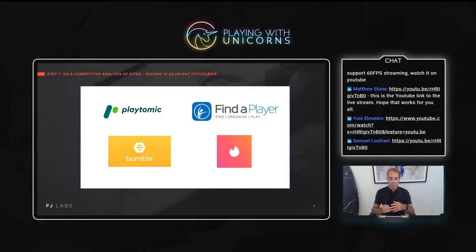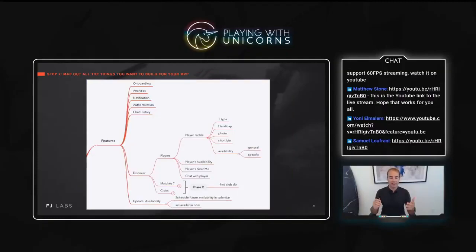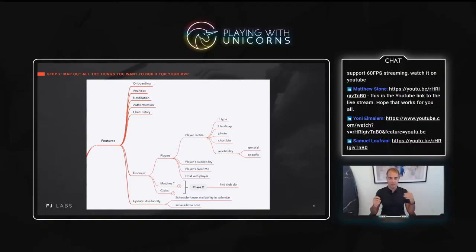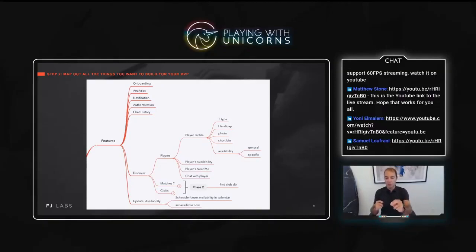Once you've analyzed the flows of competitors and people in adjacent categories, it's useful to write down everything you need your minimum viable product to do. In this case: onboarding, analytics, notifications to users that someone wants to talk or play with them, user authentication, access to chat history, and a discovery feature. The discovery feature we decided to start with was finding players near you and being able to talk to them. And you can see all the dependencies — discovering a player requires their profile, their availability, their location, and the ability to chat.